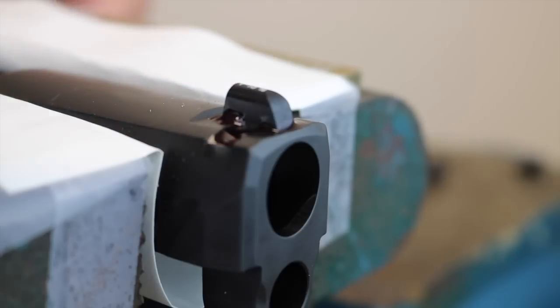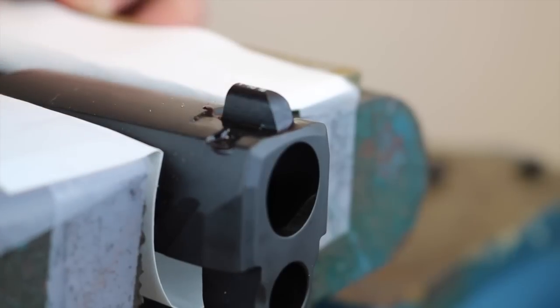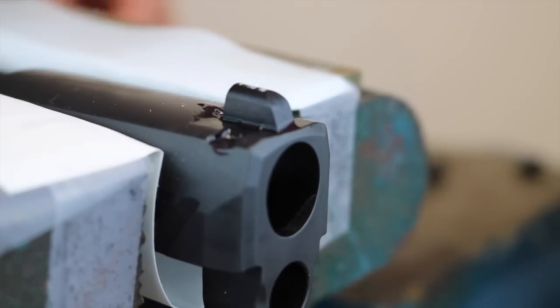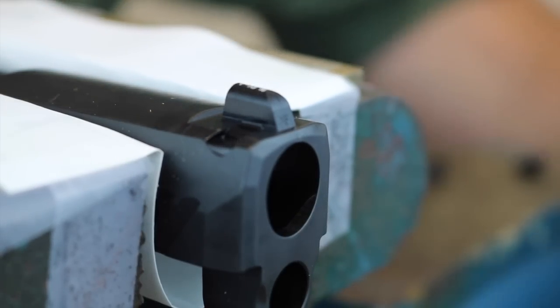Now that that's had a couple of minutes for the red thread locker to creep in, we're going to go ahead and use a q-tip and remove what did not creep in. Installation of the front sight is now complete. Time to move on to the rear sight.